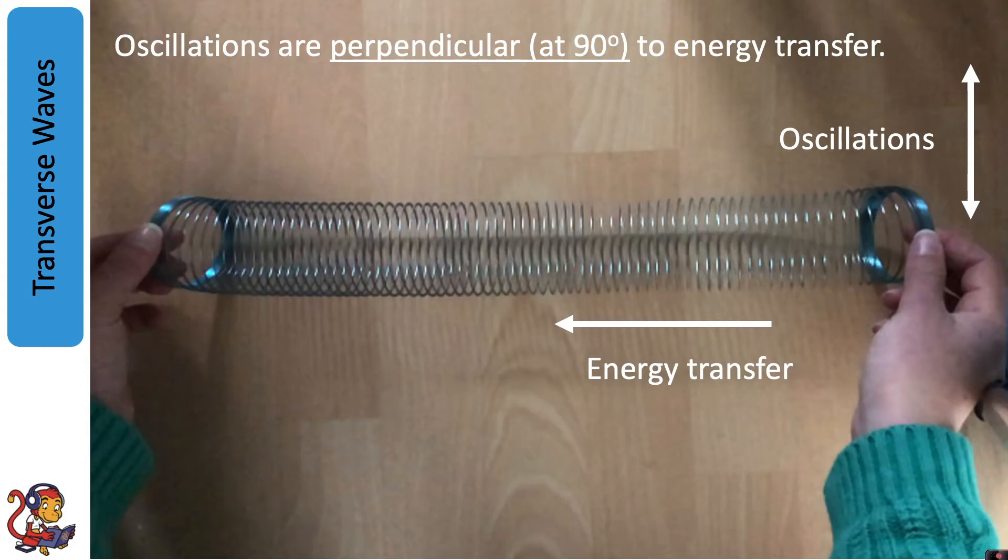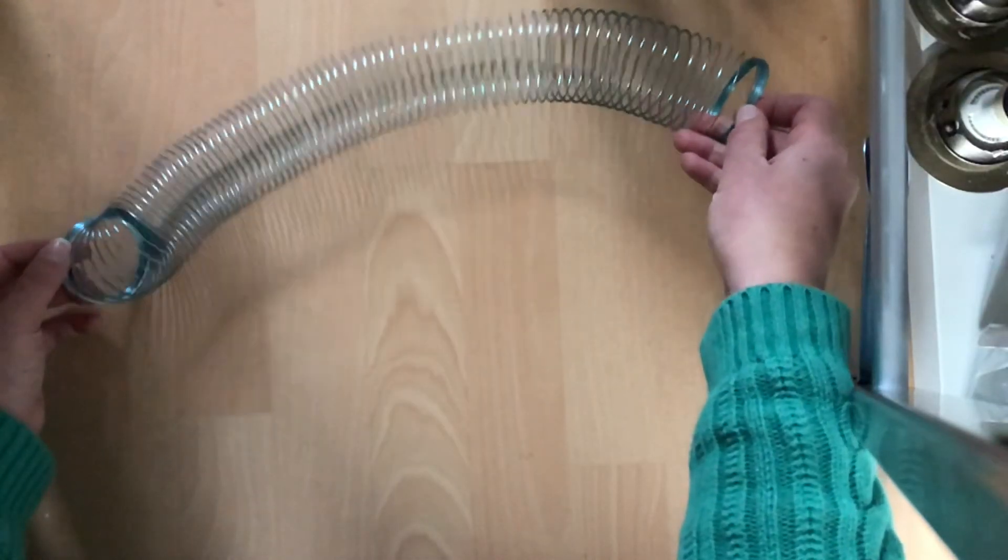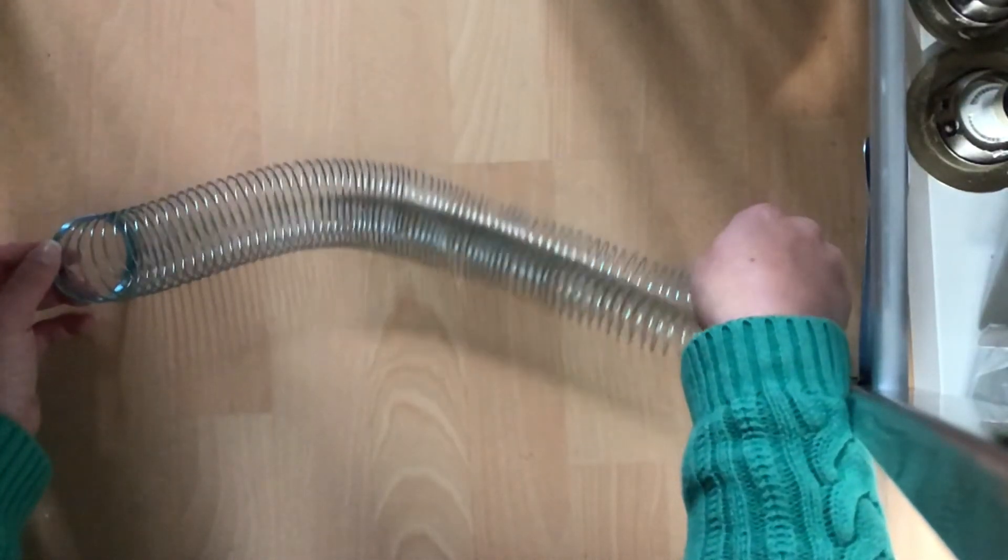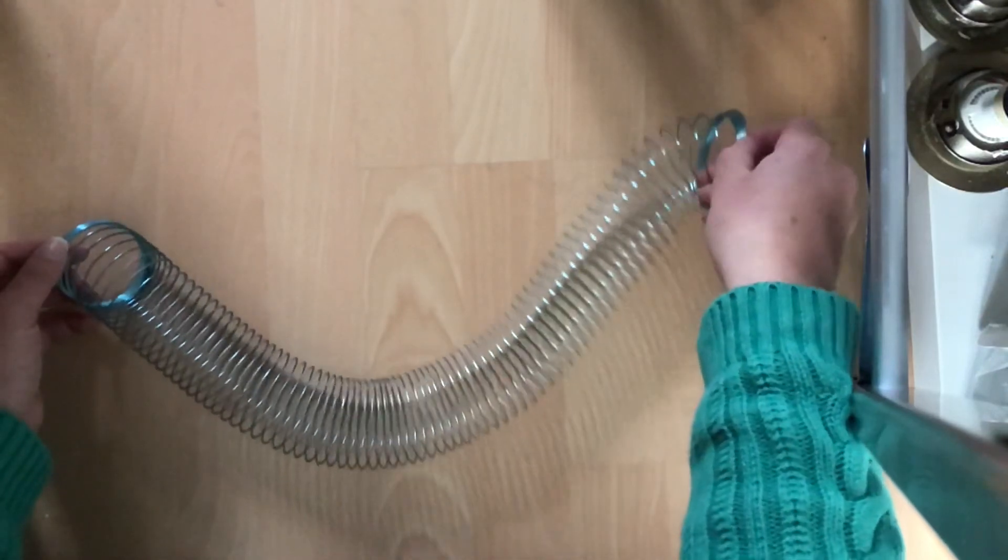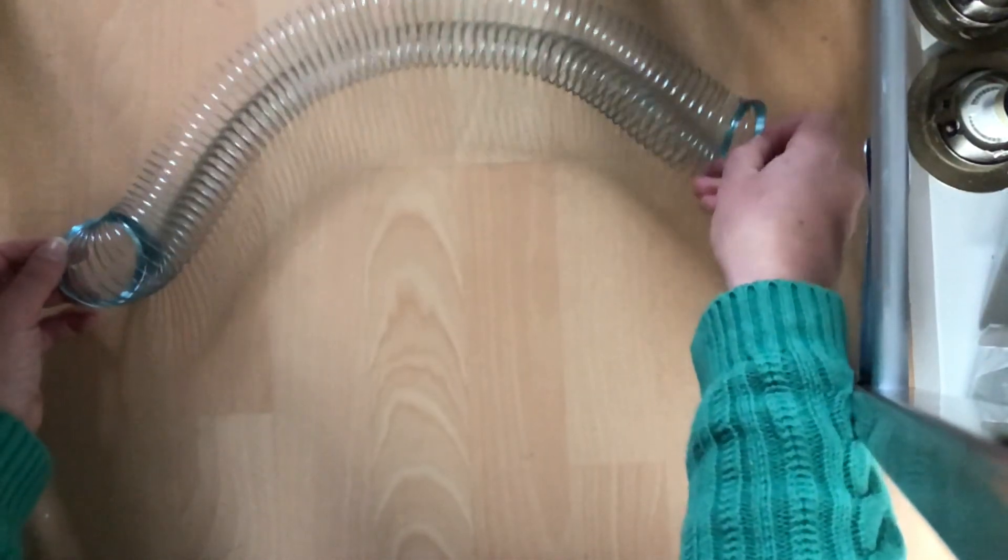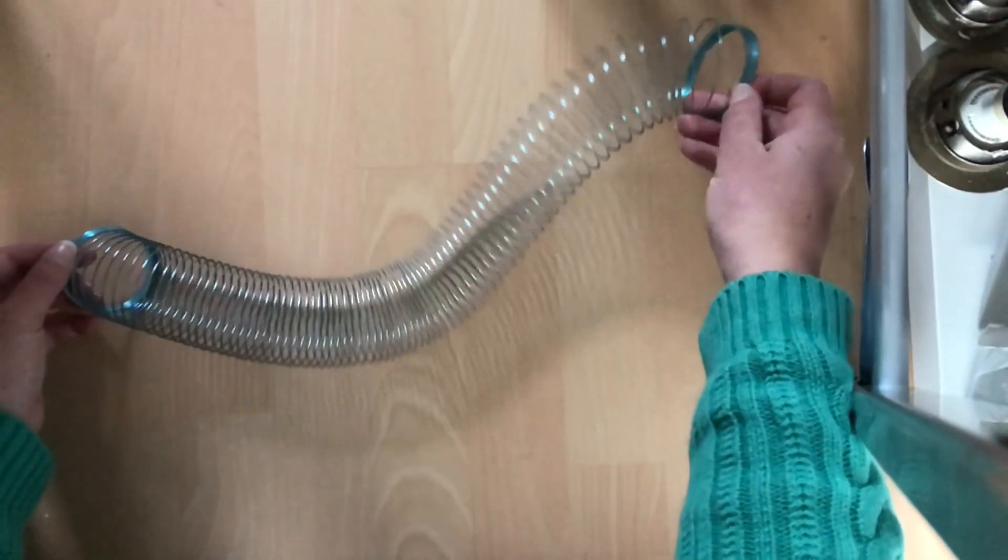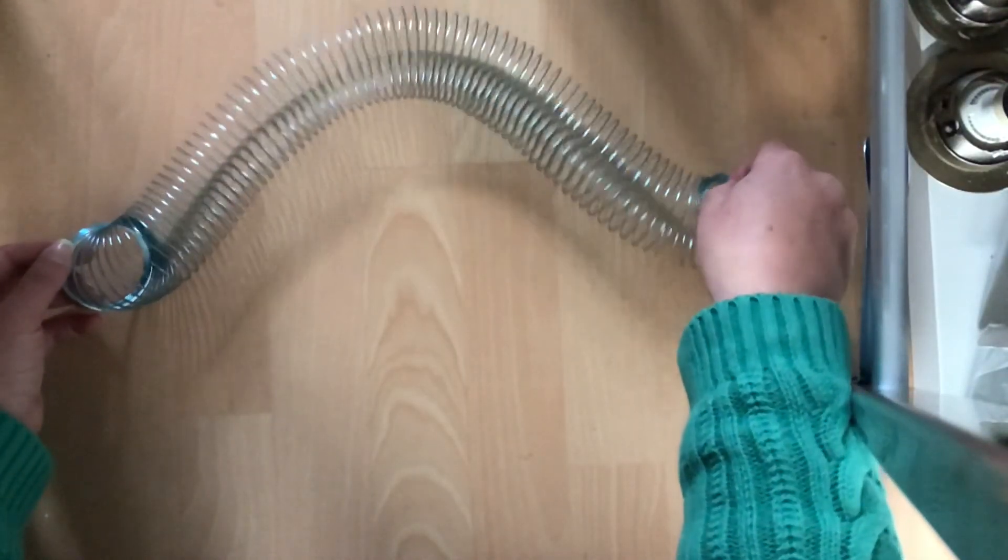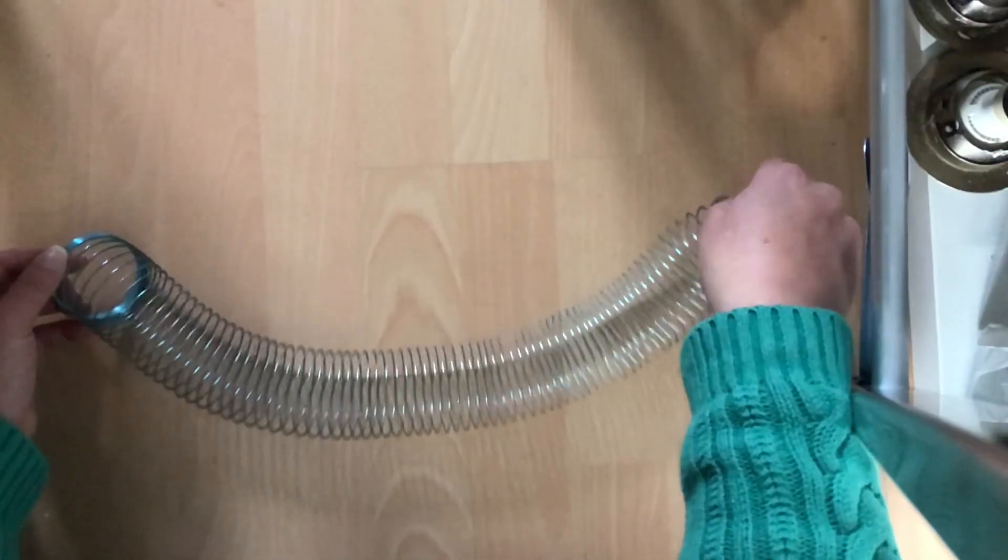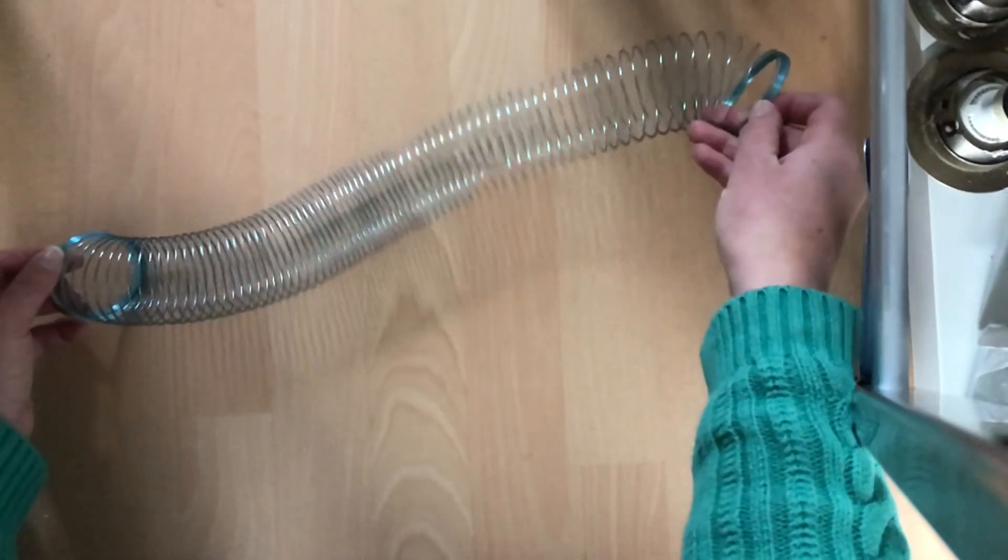So in this example notice how the oscillations are at 90 degrees to the energy transfer. So if we see a transverse wave in action you'll see as I oscillate the slinky up and down the energy is transferred from right to left. So my oscillations are perpendicular to the energy transfer.